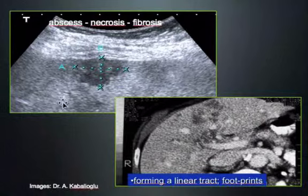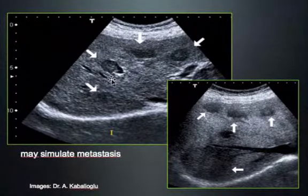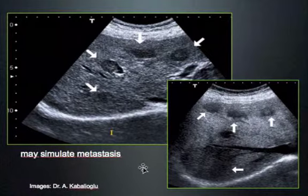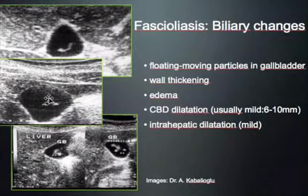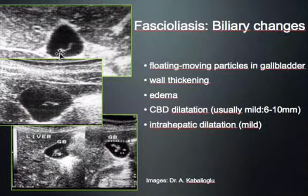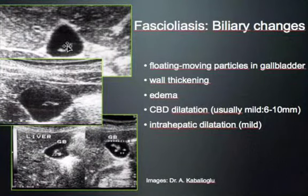The worm's footpath toward the biliary system cannot really be differentiated from an abscess or necrosis — you have to think about fasciola. It can also simulate metastasis: hypoechoic rounded lesions that turned out to be fasciola and not metastatic liver disease. When the worm finally reaches the gallbladder, you might see a floating, moving worm — a 3–4 cm object swimming in the gallbladder.